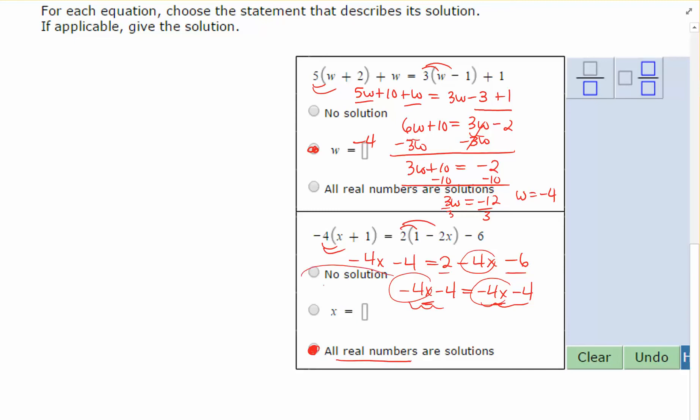Now how do we recognize a no solution? A no solution would occur in something like this. Okay, so I distribute, and I get 2X plus 2 equals 2X minus 10. Now here you can see that the X's will actually cancel. They zero out because they subtract away, and it doesn't match on both sides. I have 2 and then negative 10, and that will never be equal.